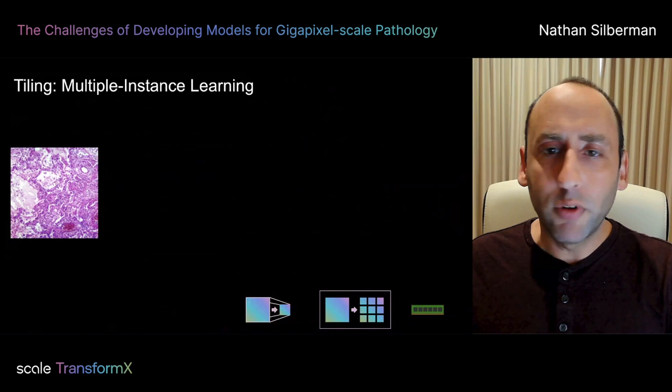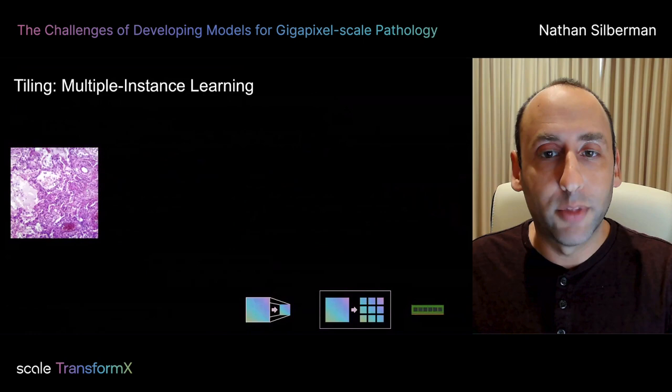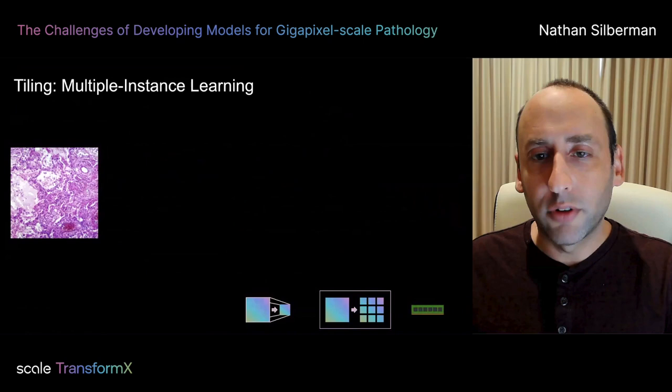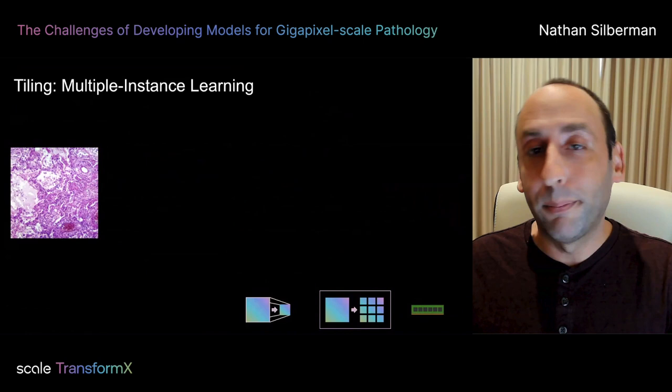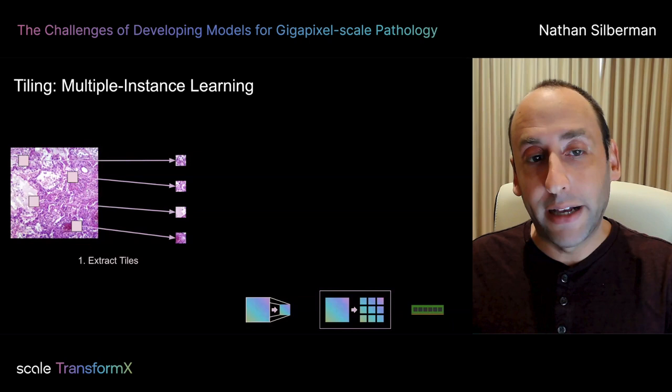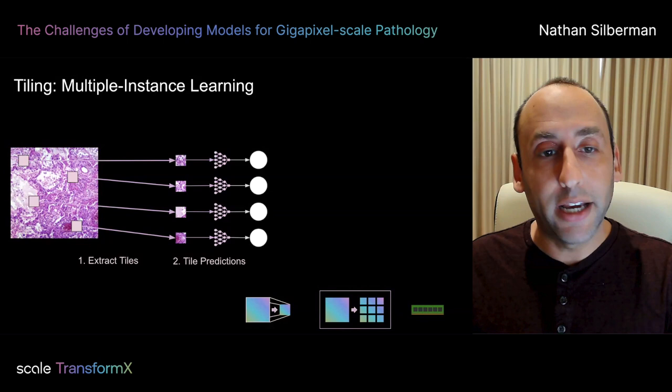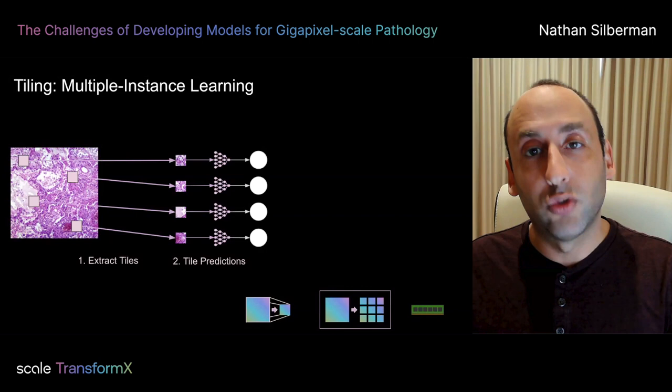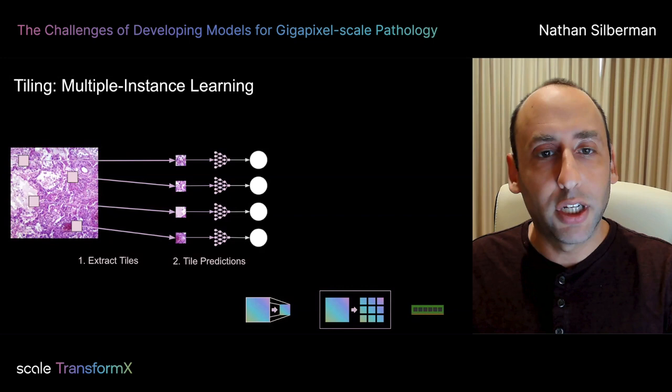To overcome some of these limitations, multiple instance learning has been used effectively on gigapixel-sized images. Rather than performing tile classification in one stage and then patient classification in a second stage, we can combine these to train a model directly to predict patient-level scores from the tiles in one stage. We start by sampling some tiles from the scene, each tile is fed to our model to predict an embedding or output prediction, and those intermediate predictions are aggregated through a differentiable function like the mean or max function to produce a single slide-level prediction.